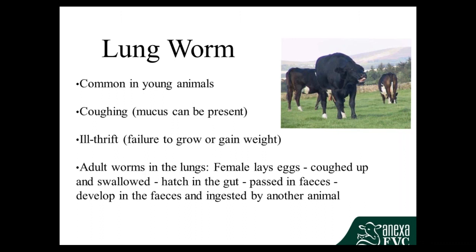The adult worms are in the lungs and lay their eggs there. The animal coughs up and swallows those eggs back to the gut, where they hatch and then pass out in the faeces as little larvae. Just like other gut worms, they develop in the faeces and move off into the pasture to hopefully be eaten by another animal and restart the whole cycle again.